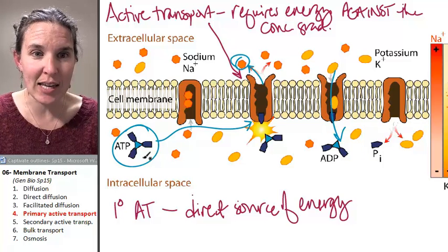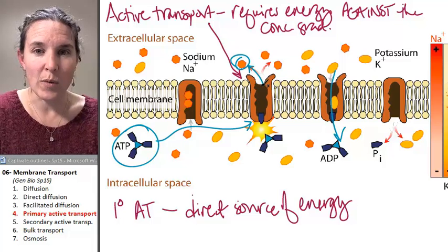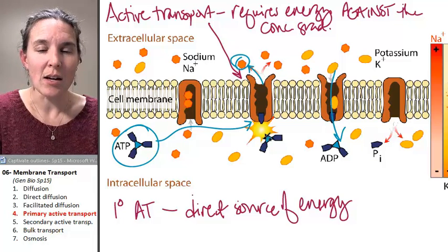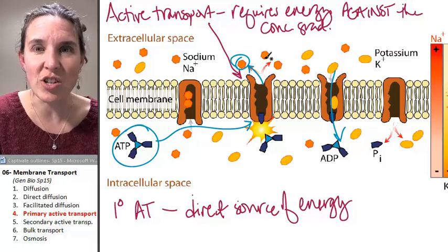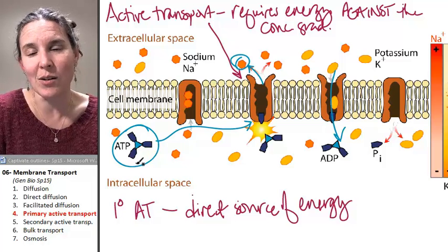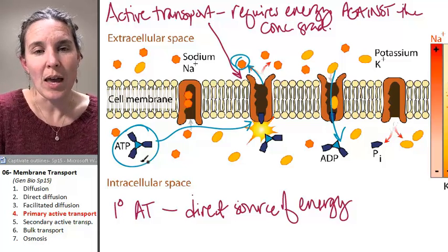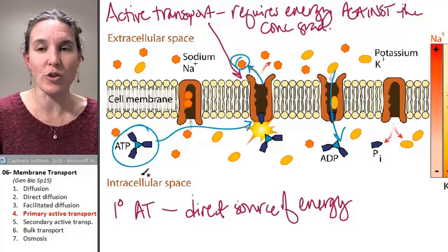It's only going to work if I have cellular energy. It's money, it's cookies, it's candy, it's ice cream. Potassium, come in. Sodium, get out against your concentration gradients. And I'll give you a little hookup of ATP here. The ATP provides the energy to pump against the concentration gradient.